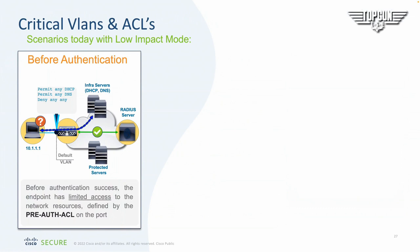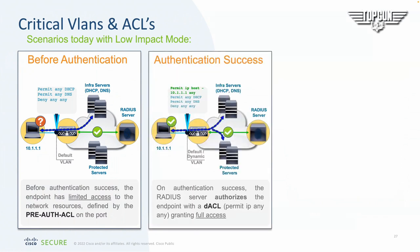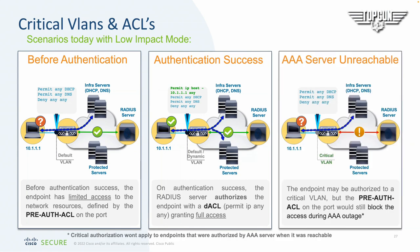Critical VLANs and ACLs: before authentication we have a pre-auth ACL that might be placed on a port in low-impact mode. When an authentication success happens, an ACL is dynamically pushed down to the interface which overrides that pre-auth ACL, giving full access since that port has been authorized for that specific client — and that's per session. Lastly, we have the AAA server unreachable environment, where I've defined a critical VLAN and a pre-auth ACL to handle AAA outages.